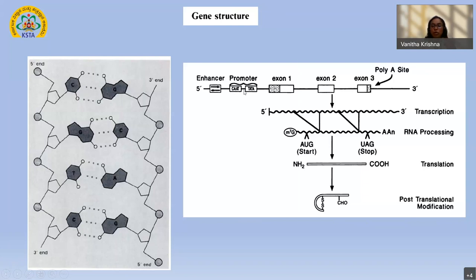The promoter has certain core sequences called the TATA box and the CAT box. TATA stands for thymine-adenine-thymine-adenine, and CAT is cytosine-adenine-adenine-thymine; we also have the GC box. The promoter is the region on the DNA which ensures the correct placing of the RNA polymerase close to the exon you want to express. It's just like the fidelity mechanism of DNA replication.